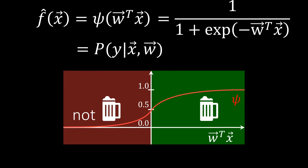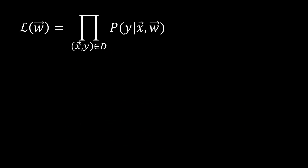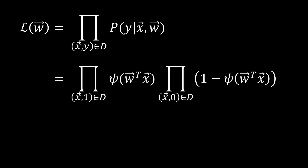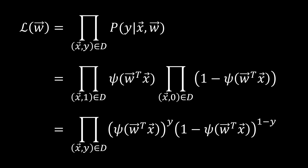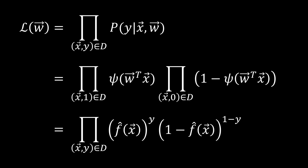To start, let us write down the likelihood of observing the outputs y, given the inputs x, and weights w. If the data samples are independent of each other, this is simply the product of the probabilities for each sample. Given the probabilistic interpretation of our model and splitting the positive and negative cases, we can write this more compactly. To further simplify it, let us denote our model by f hat. This gives us a compact formula for the likelihood of the data under our formulation for a given set of weights w.